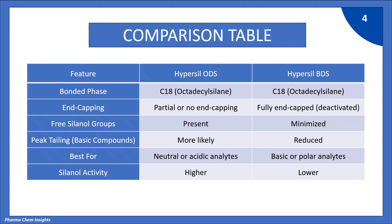Now let us see the comparison table between the two. First, bonded phase: both Hypersil ODS and Hypersil BDS have the same C18 octadecyl silane bonded phase. The difference is in end capping: Hypersil ODS has partial or no end capping, while Hypersil BDS is fully end capped, i.e., deactivated.